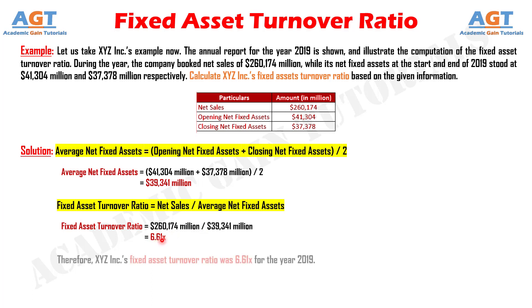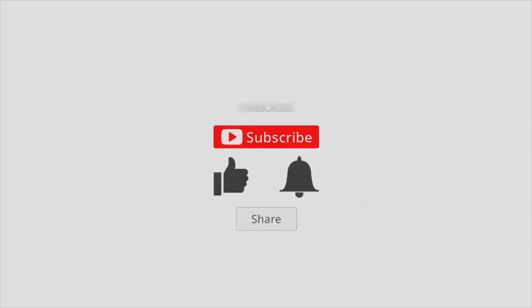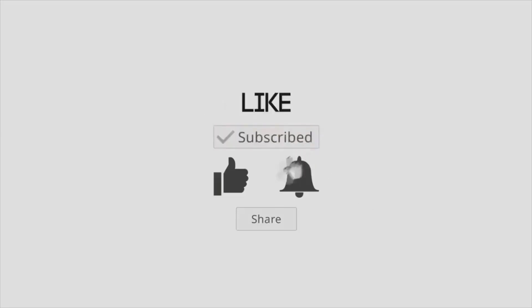Therefore, the fixed asset turnover ratio of company XYZ was 6.61 times for the year 2019.